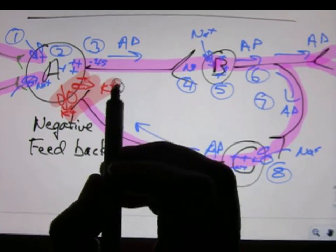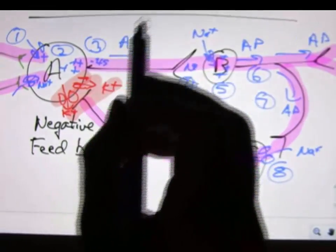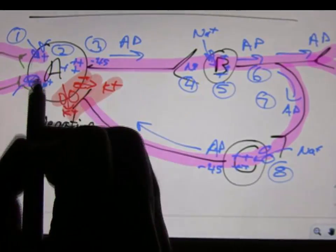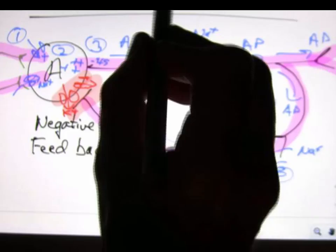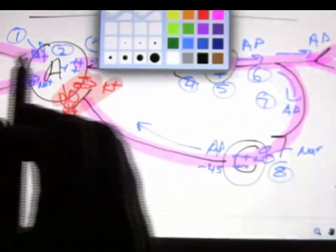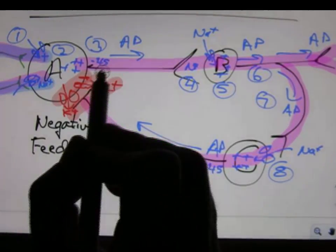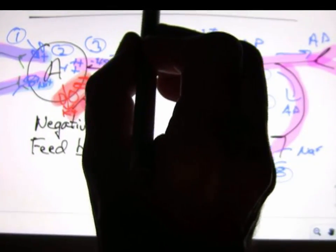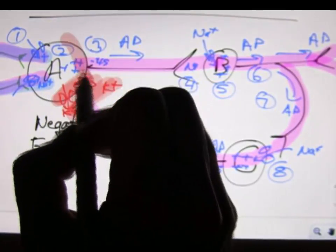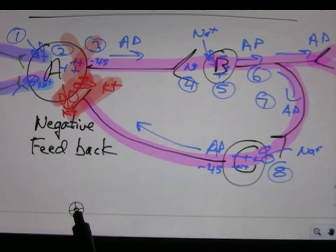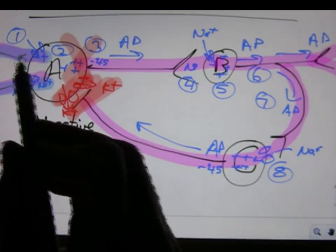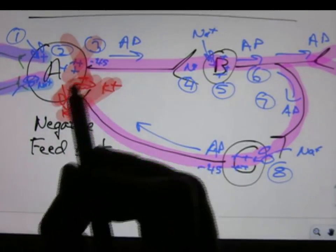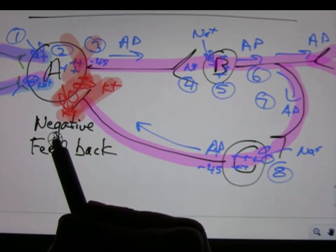And at that point, now we have the combined, the sum, of our initial positive charge coming in here, combined with the inhibition here. And at that point, we stop the action potentials. So that's negative feedback. This whole thing is continued until the time when this gets back, open a bunch of potassium channels, potassium leaves, and we stop it.